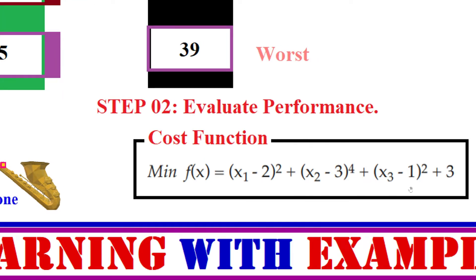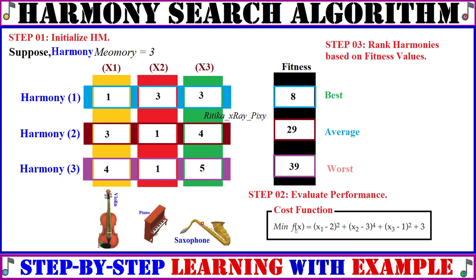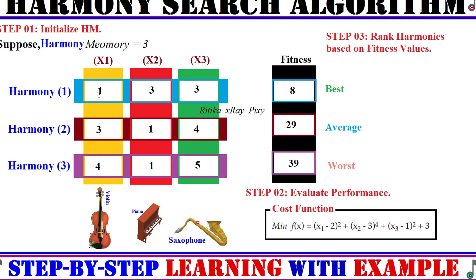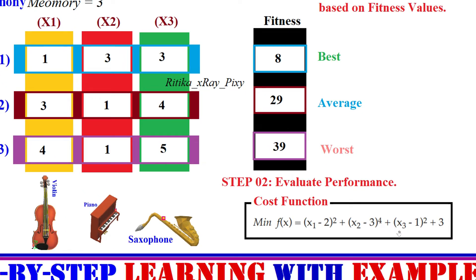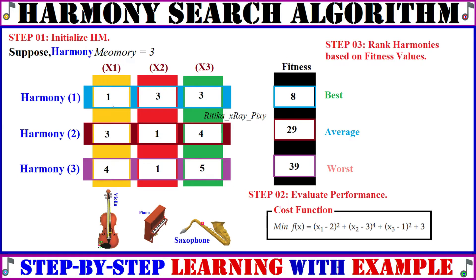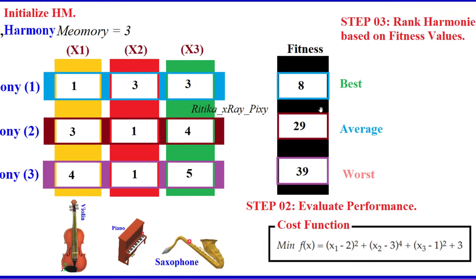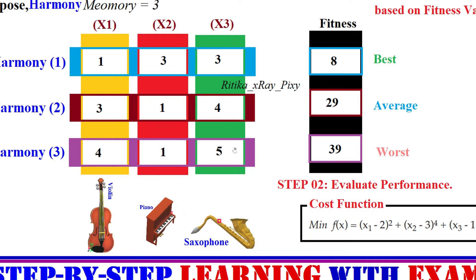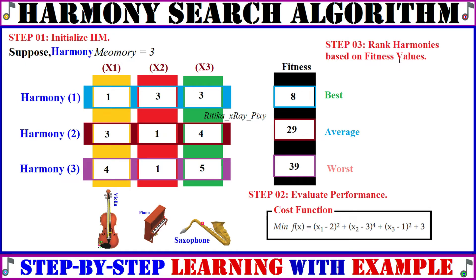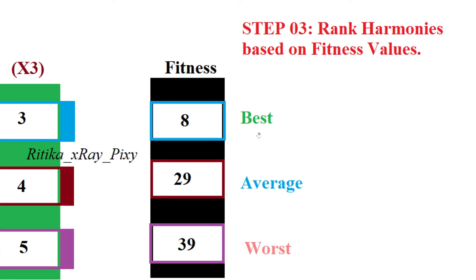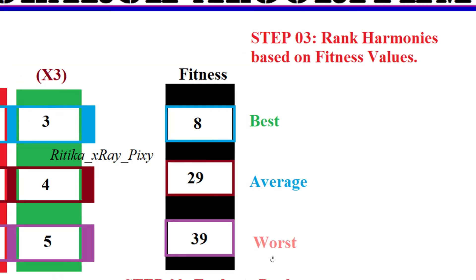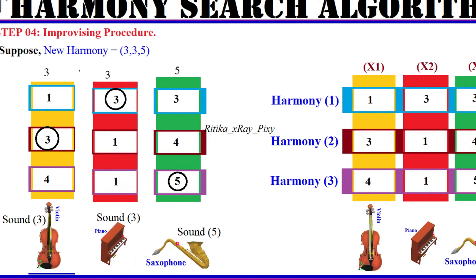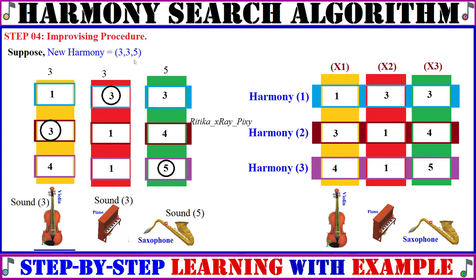In step two, a cost function is used to evaluate the performance for each harmony. For the first harmony, x1 = 1, x2 = 3, x3 = 3 — putting all values into the cost function gives a fitness value of 8. We compute fitness values for all harmonies. After ranking based on fitness values, the best value is 8 (minimum) and the worst is 39 (maximum).